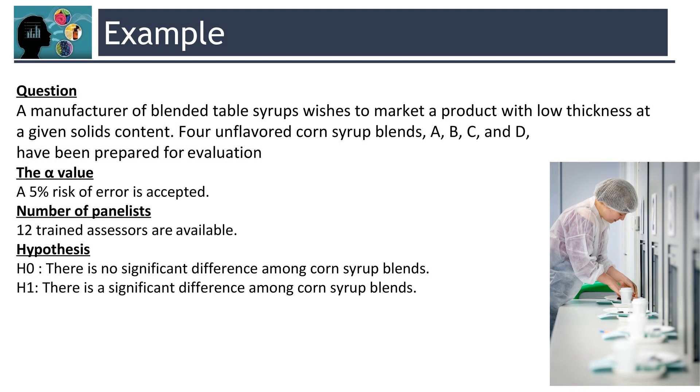Now, let's clarify the pairwise ranking test through example. Now, let's see the question. A manufacturer of blended table syrups wishes to market a product with low thickness at a given solids content. Four unflavored corn syrup blends, A, B, C, and D have been prepared for evaluation.